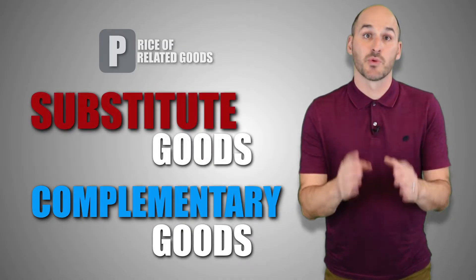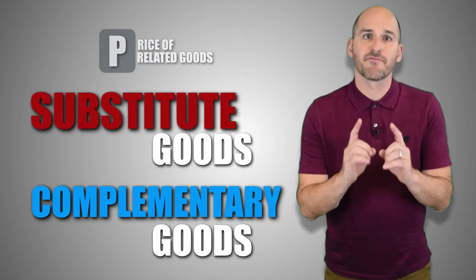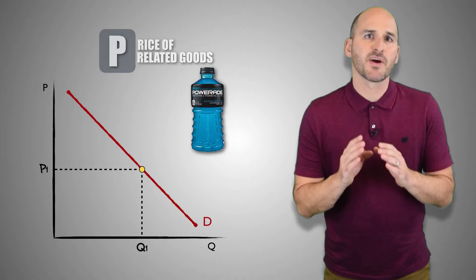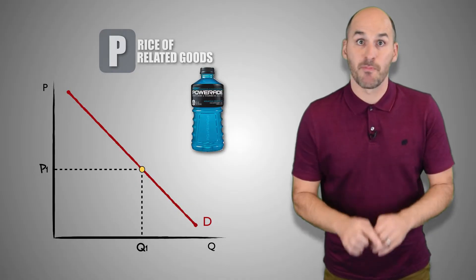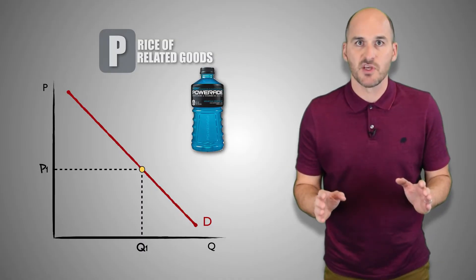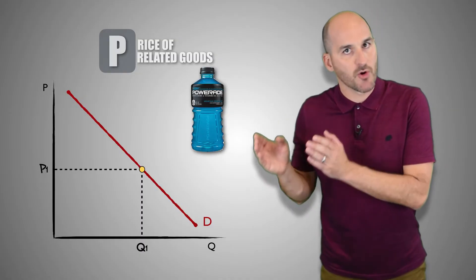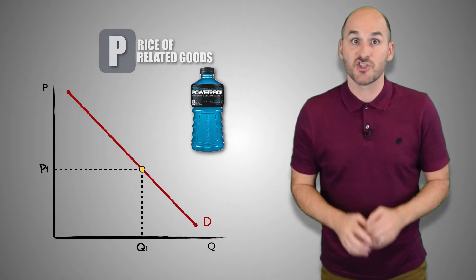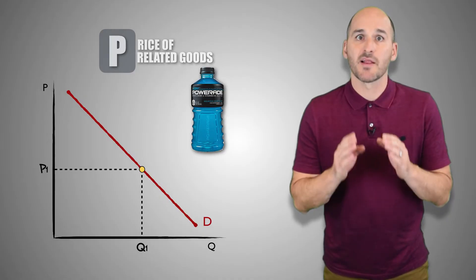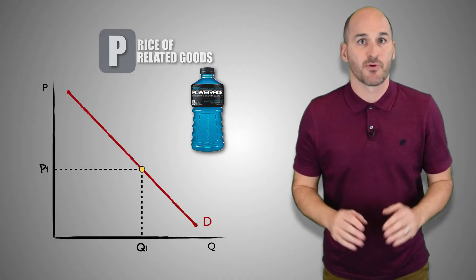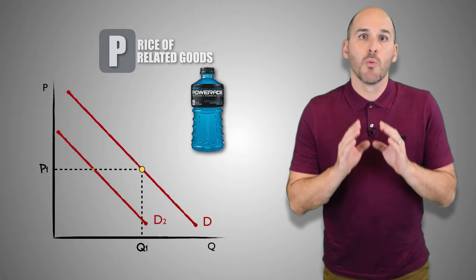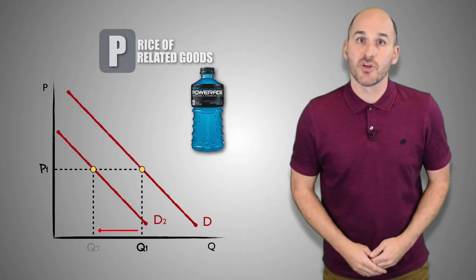A change in the price of a related good can fundamentally change the demand for a good or service. Suppose the price of Gatorade, a substitute for Powerade, decreases. Because Gatorade and Powerade are close substitutes, consumers will simply choose to buy greater quantities of Gatorade because it's cheaper and does the same job. This means consumers will buy lesser quantities of Powerade at every price level — a decrease in the price of a substitute good will cause a decrease in the demand for a good.